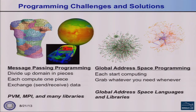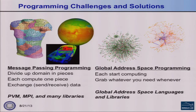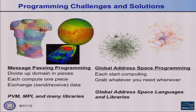PGAS languages really came about because of the difficulty with programming in a message-passing style on very large-scale machines for a certain class of problems. In an MPI-style program, you divide up a physical domain into pieces where each processor gets a piece, compute locally, and then exchange information with other processors — sometimes with complicated all-to-all communication patterns like an FFT or elliptic solver.